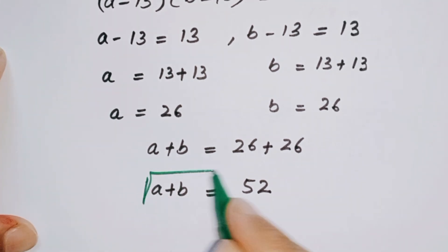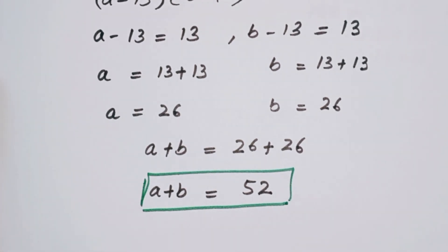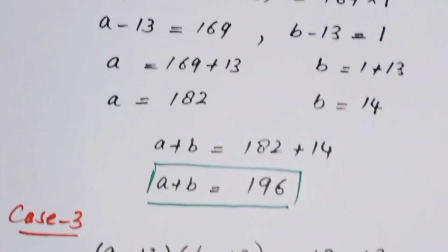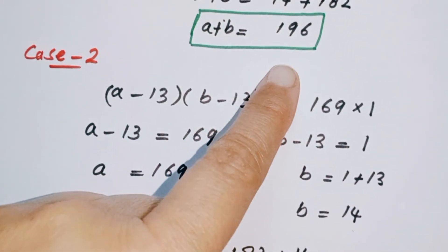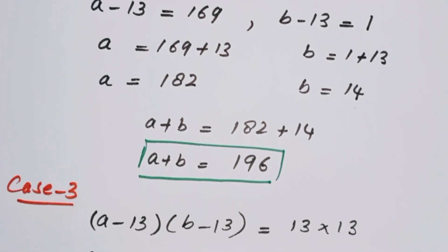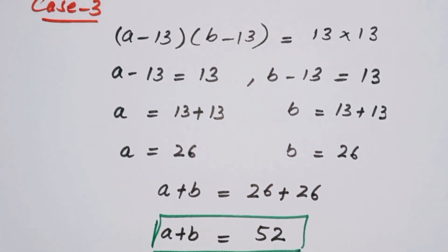So we have all three values of a plus b: a plus b equals 196, a plus b equals 196, and a plus b equals 52. That's all about this question. Thanks for watching — don't forget to subscribe to my channel for more solutions and videos like this. Till the next video, bye.